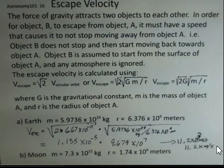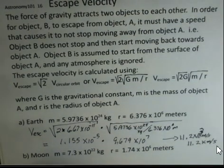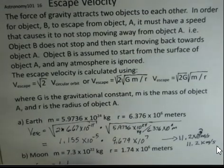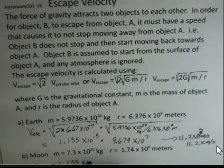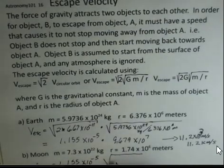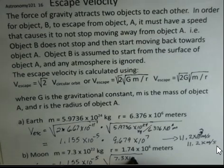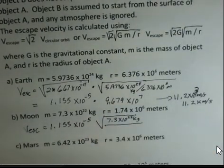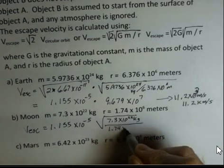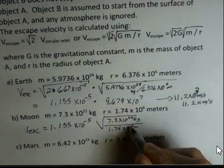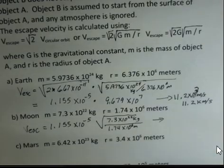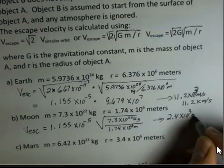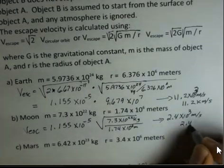Let's try another one of these. For the Moon, my escape velocity, I'm just going to use this constant 1.155 times 10 to the minus 5, and square root of 7.3 times 10 to the 22nd kilograms, 1.74 times 10 to the 6th meters. Do this calculation and I got 2.4 times 10 to the 3rd meters per second, or 2.4 kilometers per second.